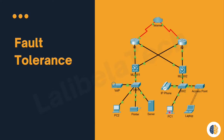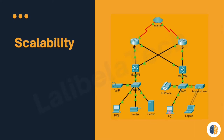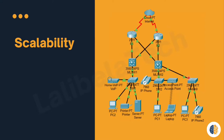Next, we will discuss about scalability. As we discussed in lecture 1.2, under the advantages of client-server model, a scalable network expands quickly to support new users and applications without degrading the performance of services that are being accessed by the existing users. If you wanted to extend the network here, you just need to add a switch and the required number of users. This is the property of a scalable network.